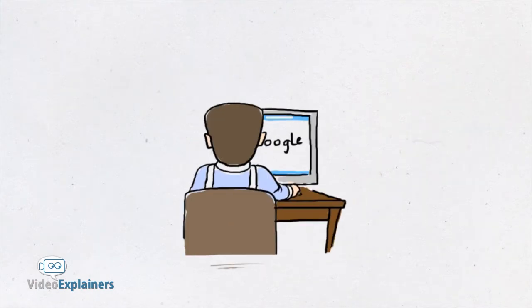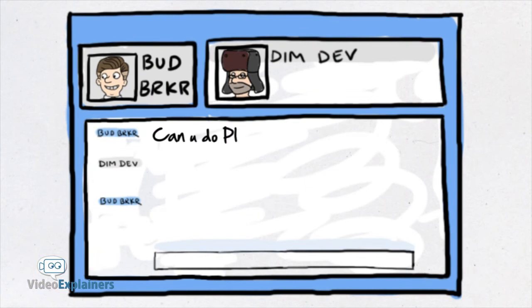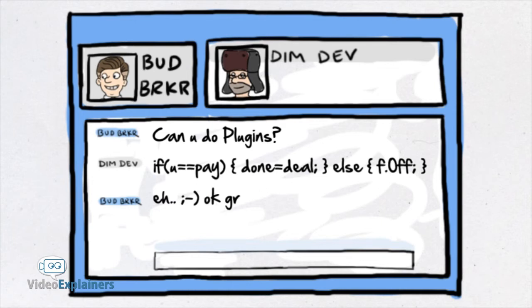Even years later, Bud keeps searching for alternative technology providers. He finally comes across Dimitri, who now has experience making FX software. They cut a deal, and Dimitri agrees to develop software for Bud.